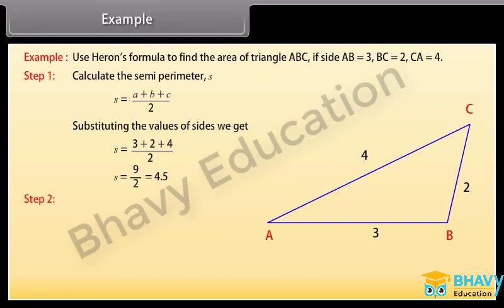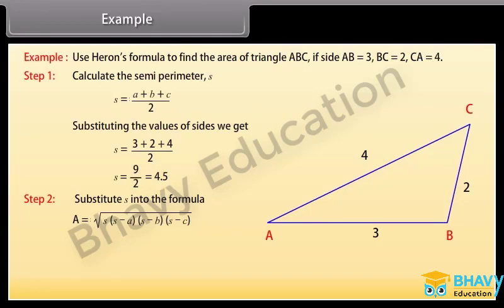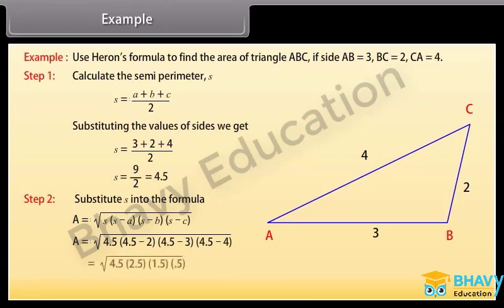Step 2: Substitute S into the formula A = √(S × (S − A) × (S − B) × (S − C)). We get A = √(4.5 × (4.5 − 2) × (4.5 − 3) × (4.5 − 4)). By calculating it we get A = √8.4375, which is approximately equal to 2.9.